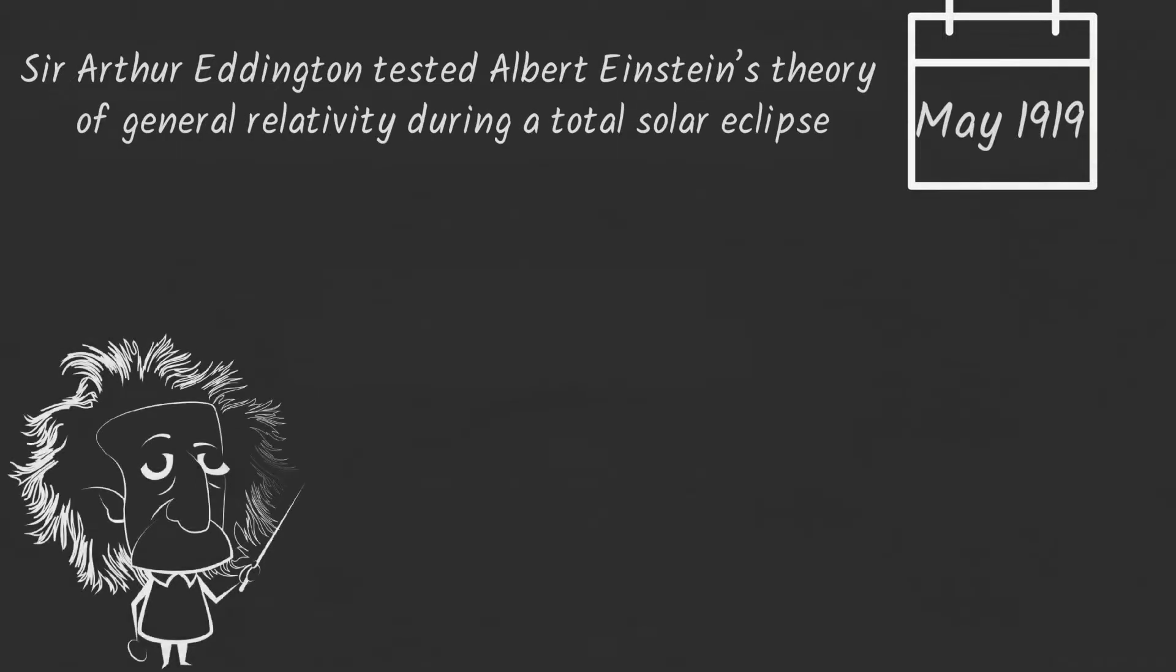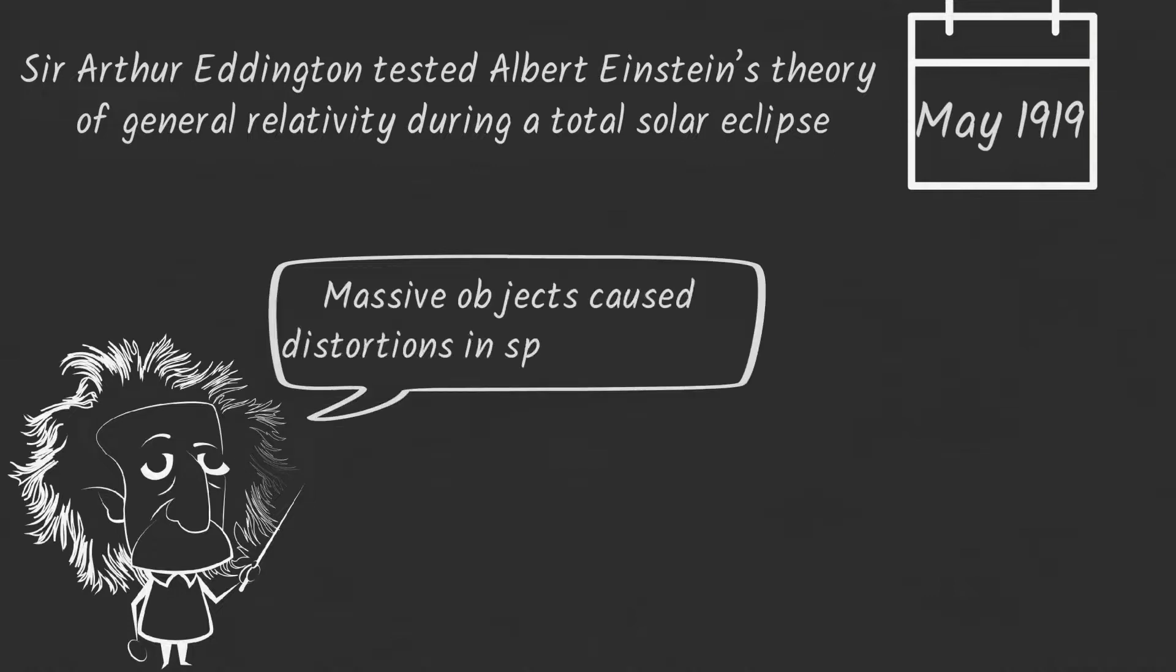Einstein had theorized that massive objects cause distortions in space and time. Eddington confirmed that starlight bent around the sun by measuring the position of certain stars relative to the eclipse.